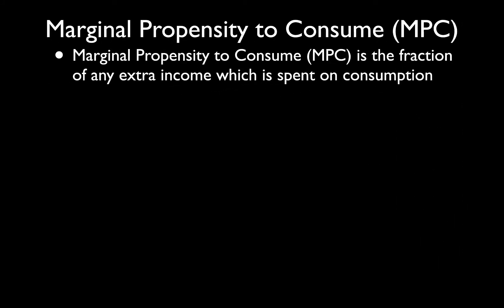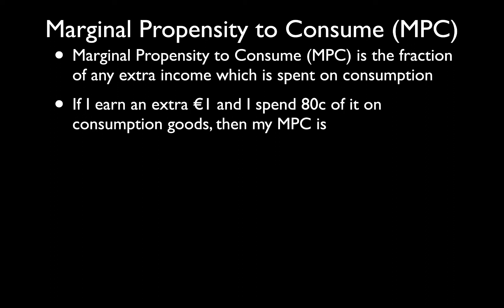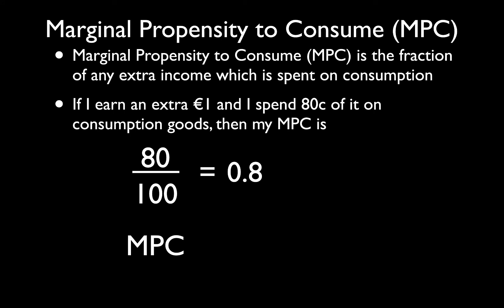The MPC is the fraction of any extra income which is spent on consumption. If I earn an extra €1 and I spend an extra €0.80, the MPC is calculated as the change in consumption divided by the change in income — that's 80 over 100, which equals 0.8. In this video we're going to concentrate on the MPC.